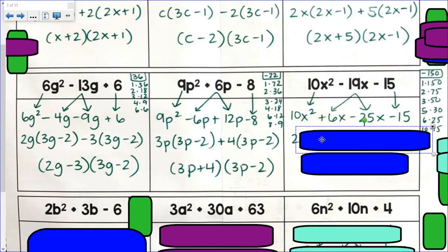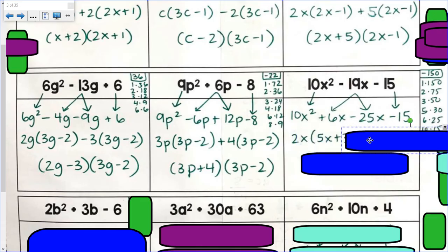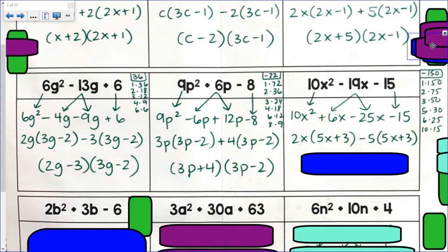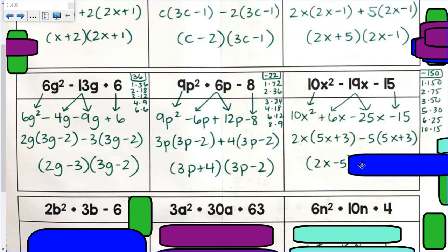I factor out my GCF, 2x, and then times 5x plus 3. I need to factor out a negative because this next binomial starts with a negative. Negative 5. And then I'll left with 5x plus 3. I see the twins. 2x plus 5 is my first factored form. Part of my factored form. Then 5x plus 3.